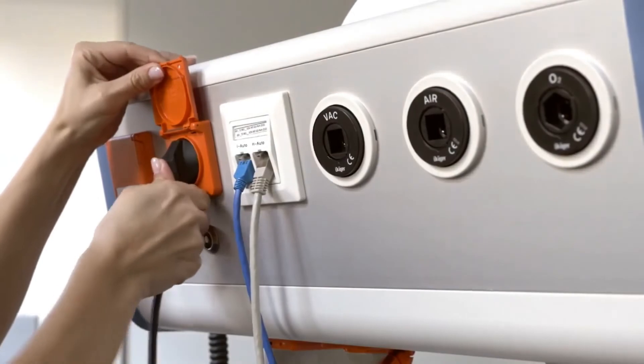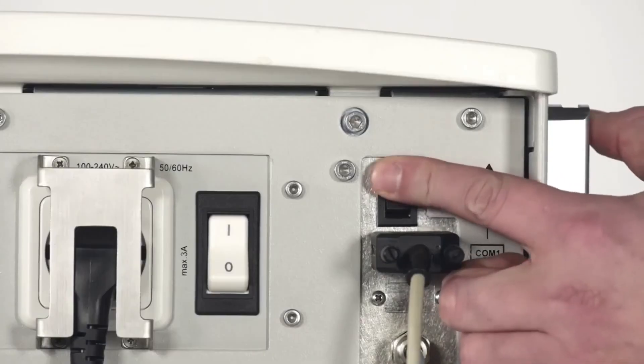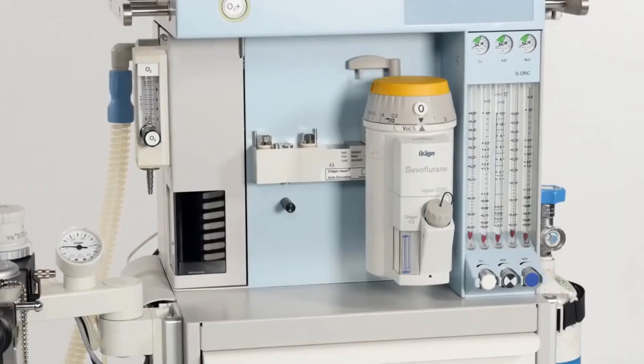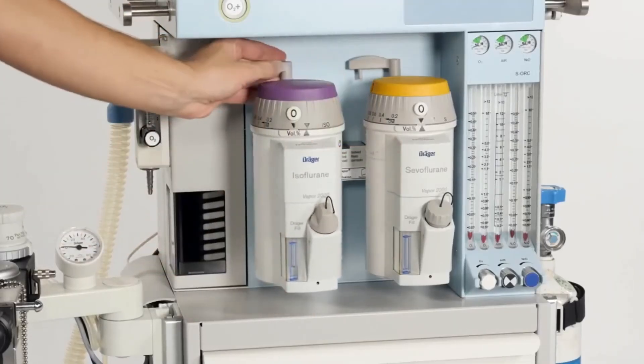Push the power plug into the supply main socket. Switch on the machine by using the on-off switch on the rear of the machine. Install the vaporizer onto the mount of the Fabius Plus XL.